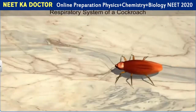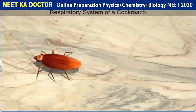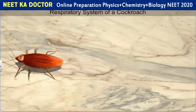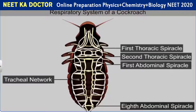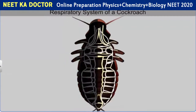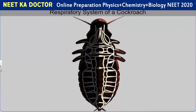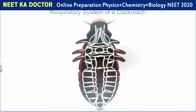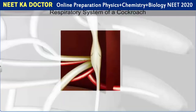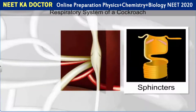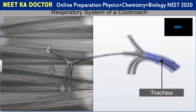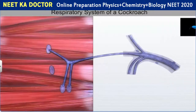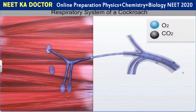The haemolymph from these sinuses enters the heart through ostia and is pumped back into the sinuses anteriorly. The respiratory system also forms a part of the anatomical study of a cockroach. This system consists of a network of trachea that opens to the exterior through ten pairs of spiracles which are located on the lateral side of the body. The opening of these spiracles is regulated by sphincters. The tracheas are further divided into thin tracheoles which supply oxygen to all the parts of the body.